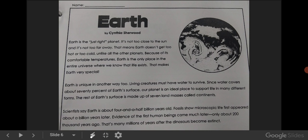The rest of Earth's surface is made up of seven land masses, called continents. Scientists say Earth is about four and a half billion years old. Fossils show microscopic life that first appeared about a billion years ago. Evidence of the first human beings come much later, only about 200,000 years ago. That's many millions of years after the dinosaurs became extinct.